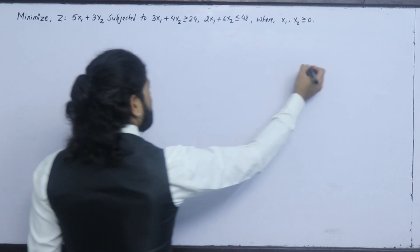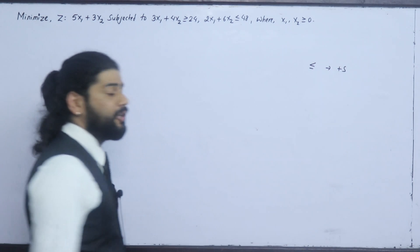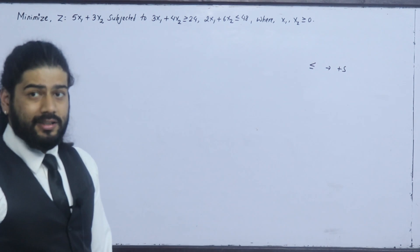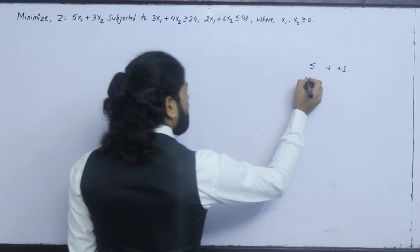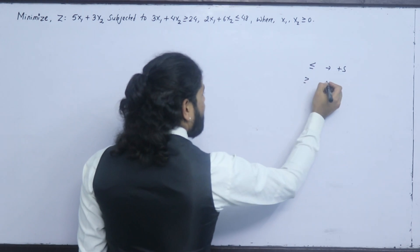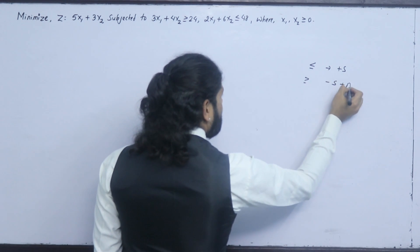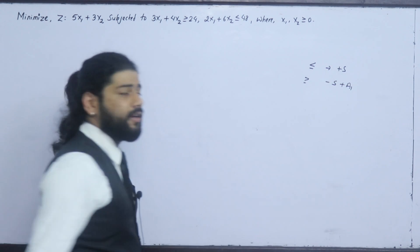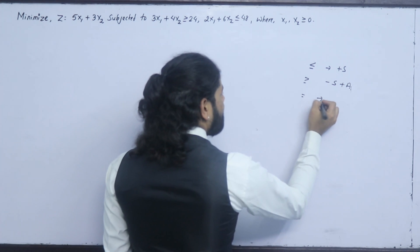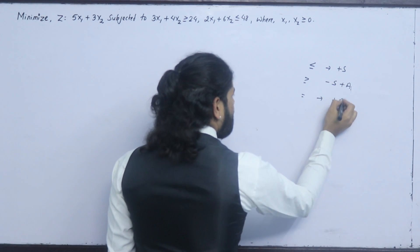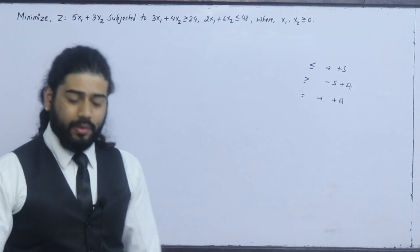So: for less than or equal to, we add slack variable k. For greater than or equal to, we add minus surplus variable plus artificial variable k. For equal to type, we add only artificial variable k.